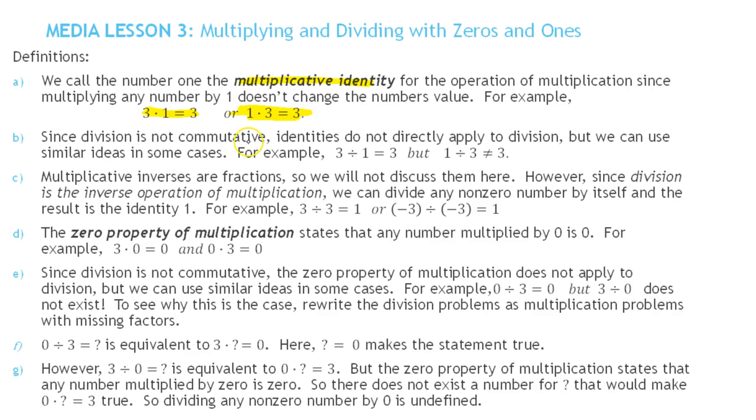Recall, division is not commutative, so identities do not directly apply to division. If we divide 3 by 1, we do in fact get 3. But if the 1 is first, 1 divided by 3 does not equal 3. It equals 1 third, which we'll learn about later. So in one direction, dividing by 1 gives the original number, but dividing 1 by a number does not give the original number.